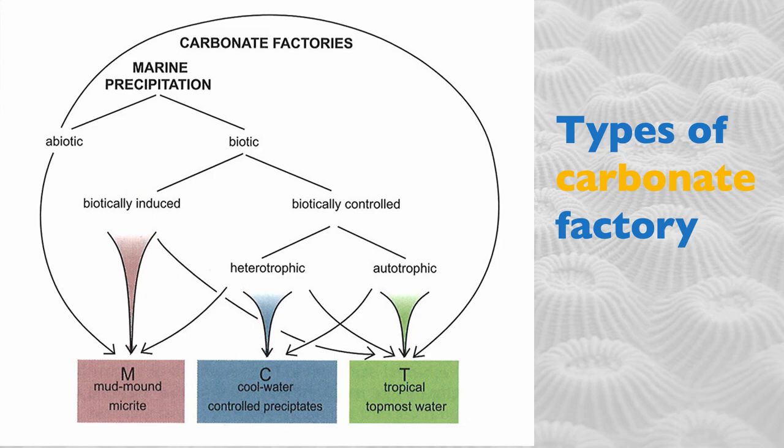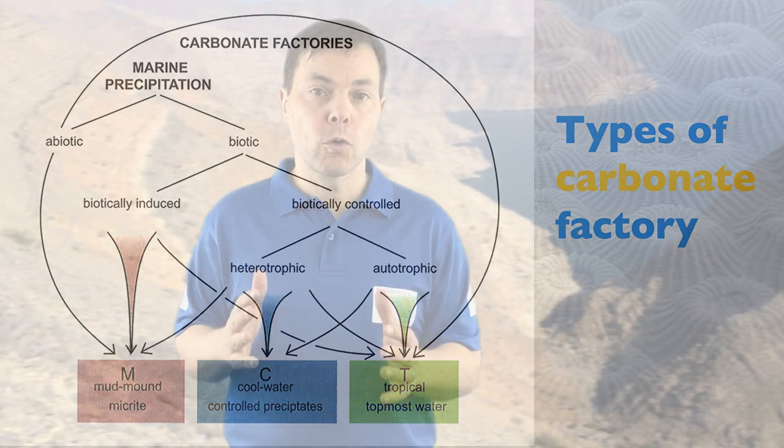Looking at the biotically controlled factories, we distinguish two types. One is dominated by heterotrophic organisms like the shells we've seen on that beach. This is known as the C factory — C for cool water carbonates, but also for controlled precipitation. In terms of volume, this factory is not very abundant, and it tends to grow in colder waters.